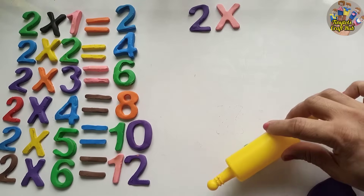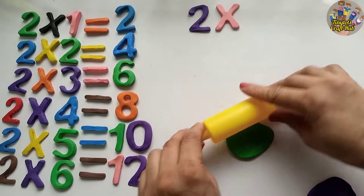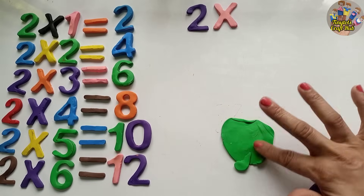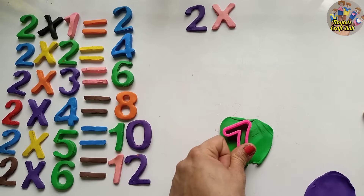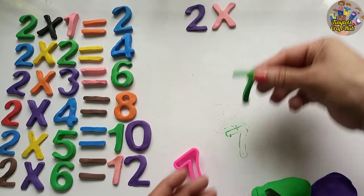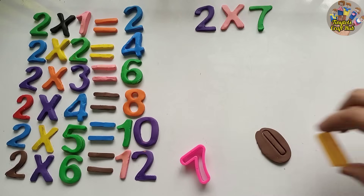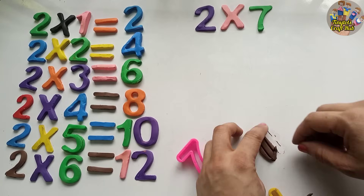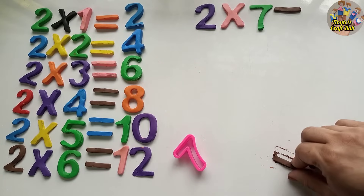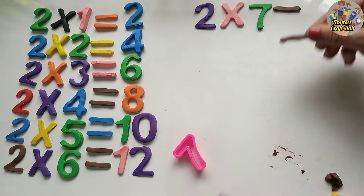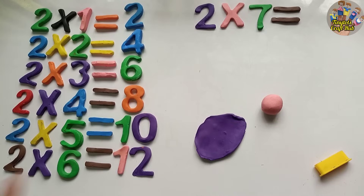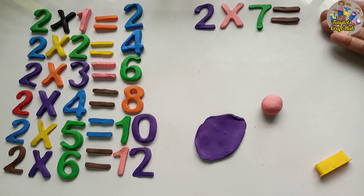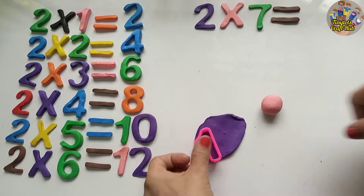The next value is two sevens. Do you know what the answer is? Let's guess — two sevens are equal to... Let's add two to the previous answer: twelve, thirteen, fourteen. Yes! Two sevens are equal to fourteen. Another way is to add two seven times: two, four, six, eight, ten, twelve, fourteen. So the answer is fourteen.